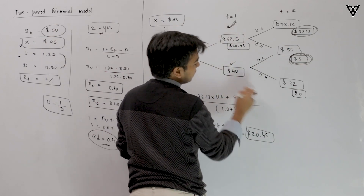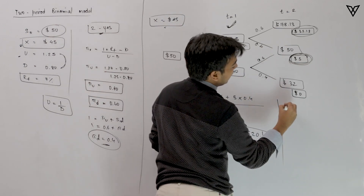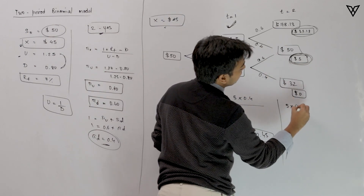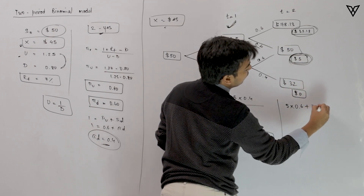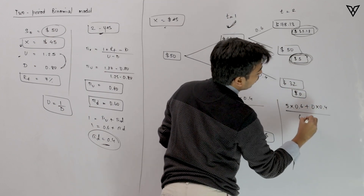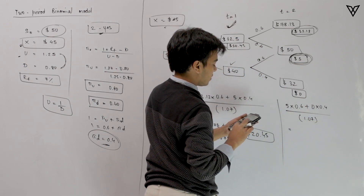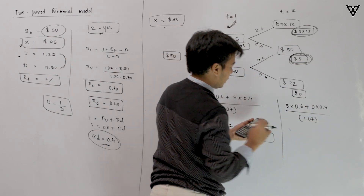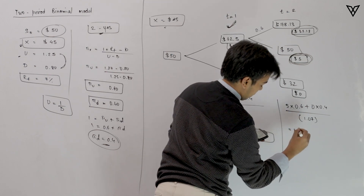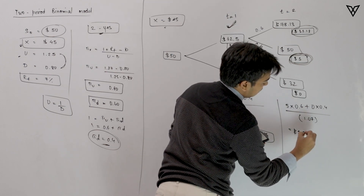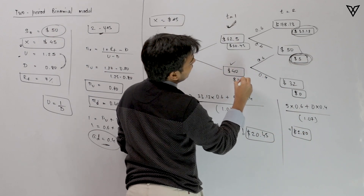For C−, we calculate: (5 × 0.6 + 0 × 0.4) / 1.07 = (5 × 0.6) / 1.07 = 3 / 1.07, which gives a value of $2.80. This is the value of the call option at the down node at time period 1.